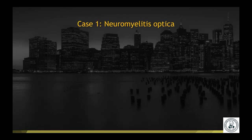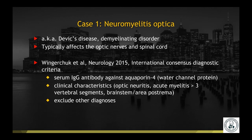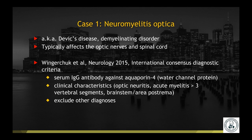These are cases of neuromyelitis optica, NMO, also known as Devic disease. It is a demyelinating disorder that typically affects the optic nerves and the spinal cord. International consensus diagnostic criteria include a serum IgG antibody against aquaporin-4, as well as key clinical characteristics including optic neuritis, acute myelitis with cord lesions that are more longitudinal across multiple vertebral segments, and involvement of the brain stem and area postrema. It also involves excluding other diagnoses.